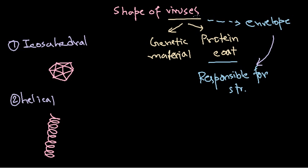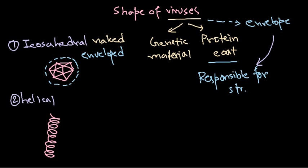Both types can vary depending on whether they are coated with an envelope or not. For example, icosahedral viruses can have an envelope or not. If the envelope is present, we call it icosahedral enveloped; if not, we call it icosahedral naked — meaning no envelope. Similarly, for helical viruses, we can have helical non-enveloped and helical enveloped forms.